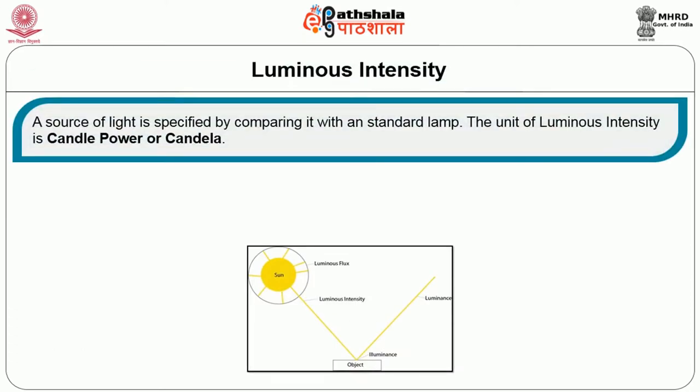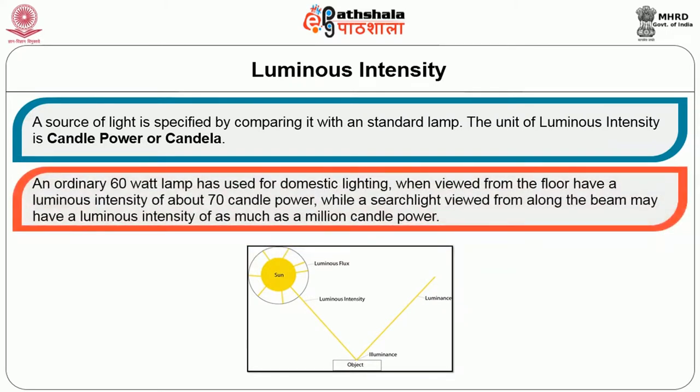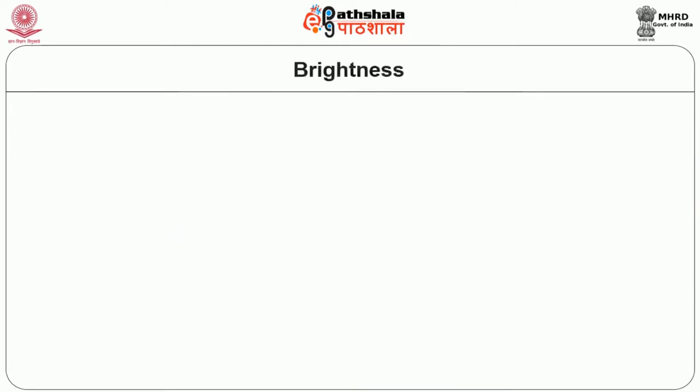Luminous intensity: a source of light is specified by comparing it with a standard lamp. The unit of luminous intensity is called candle power or candela. An ordinary 60-watt lamp used for domestic lighting, when viewed from the floor, has a luminous intensity of about 70 candle power, while a searchlight viewed from along the beam may have a luminous intensity of as much as one million candle power.